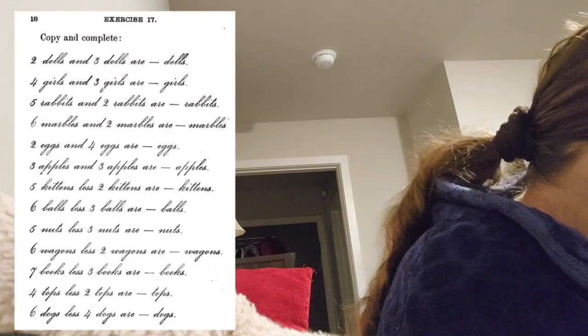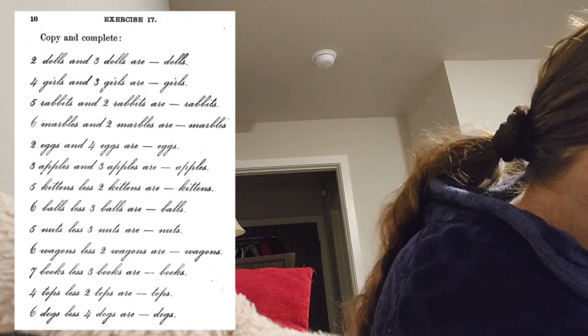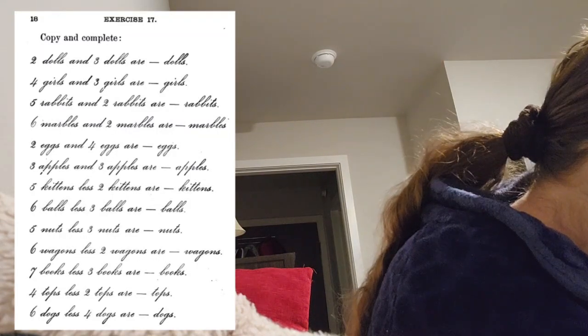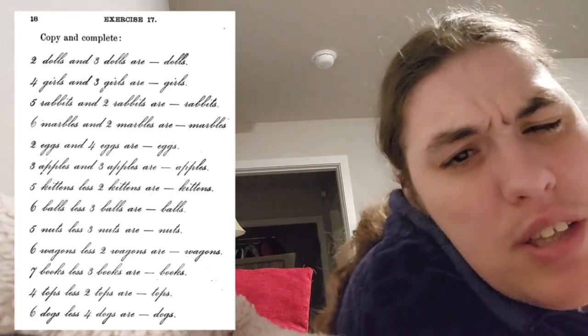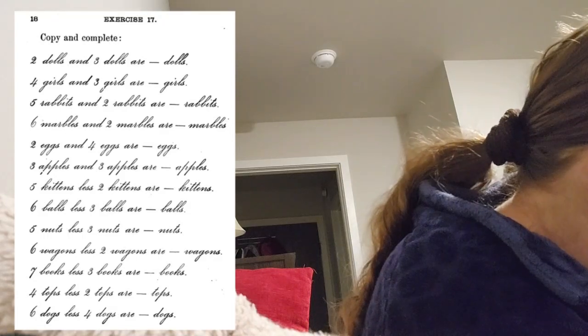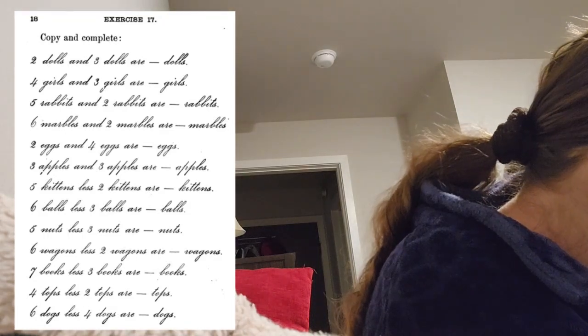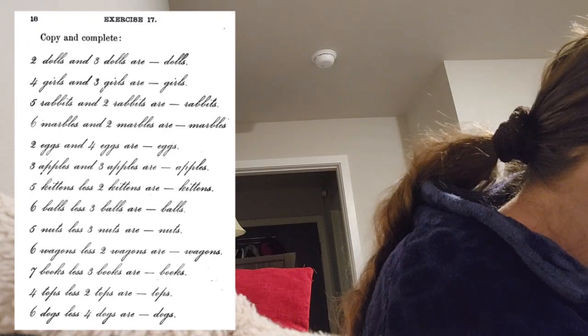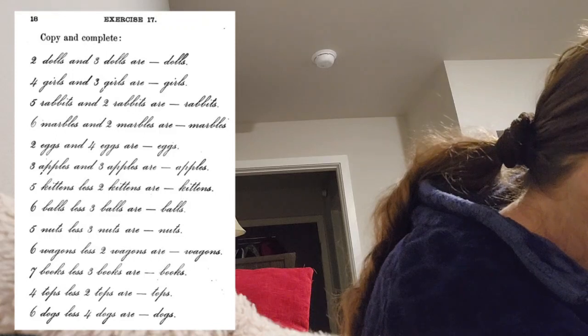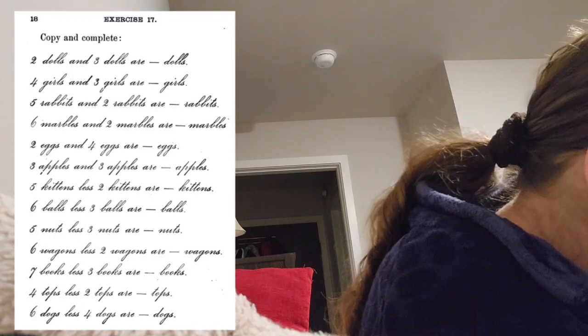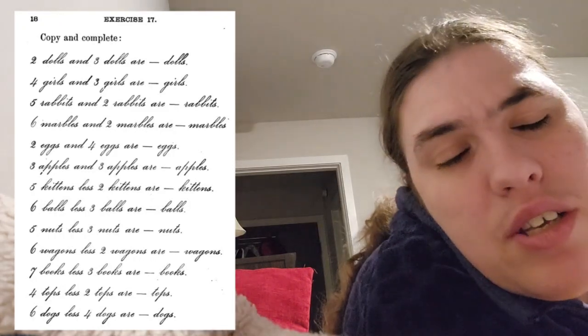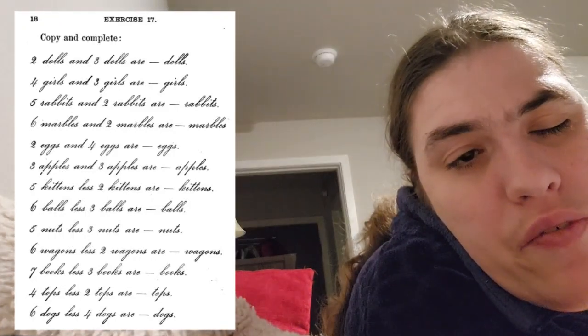Continuing on with the wagons. Six wagons less two wagons are four wagons. Seven books less three books are four books.